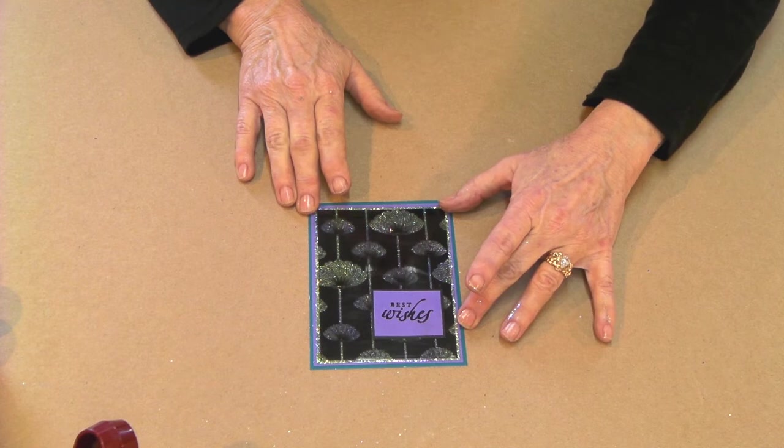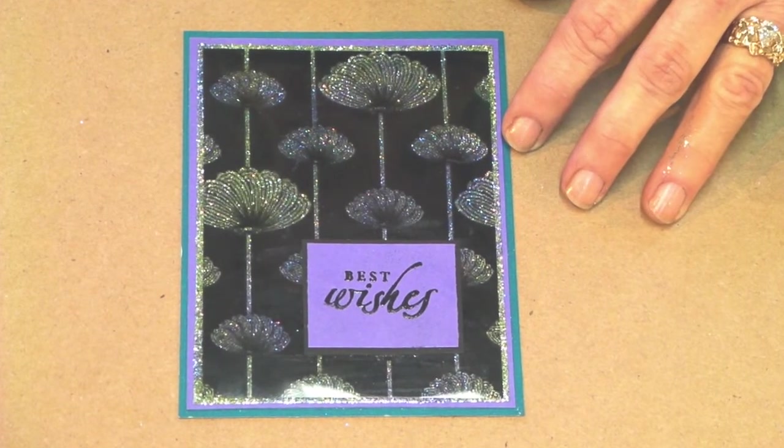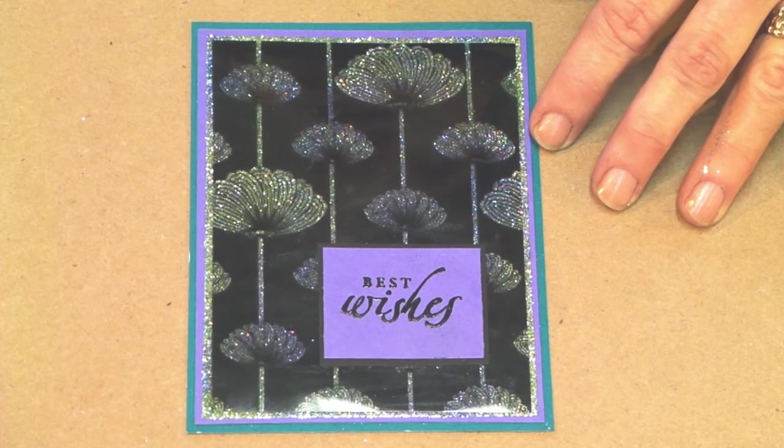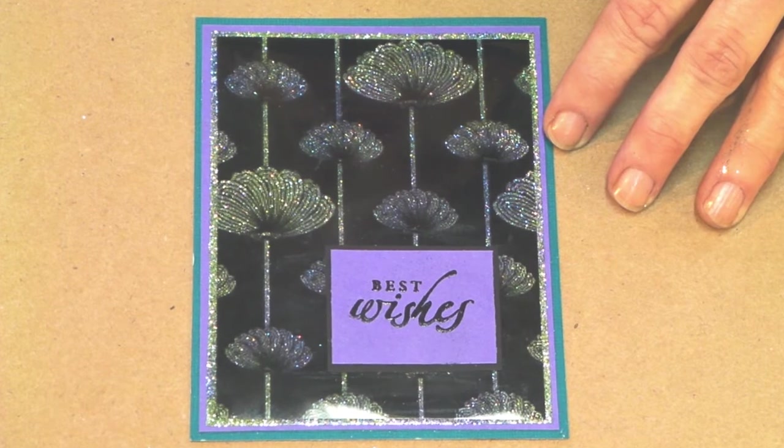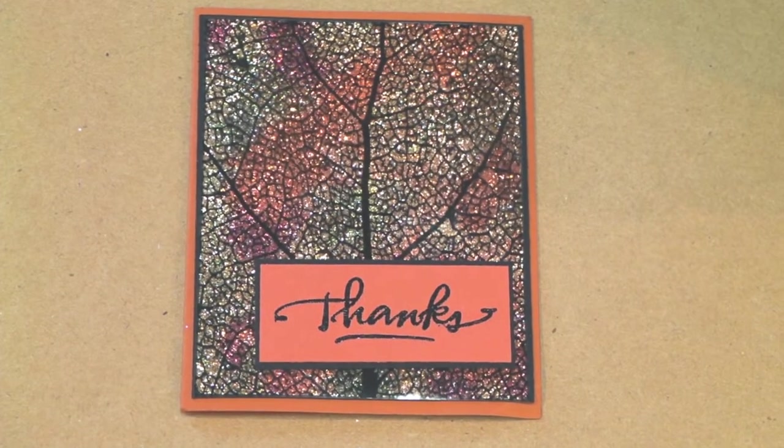And here we have our finished piece. I just love those colors. And all from the spring glitter glitz wheel. That leaf pattern is just one of my favorites.